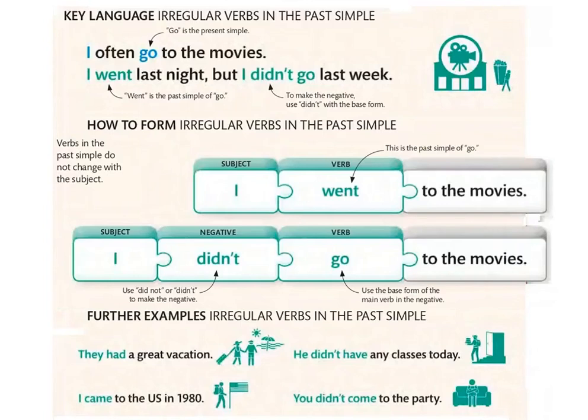Verbs in the past simple do not change with the subject. In the past simple, the verb stays the same with all subjects — I, he, she, we, they. ال-do هي اللي نصرفوها: I didn't go في الماضي، كما في الpresent I don't go.